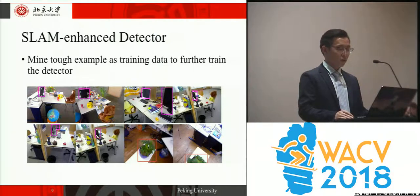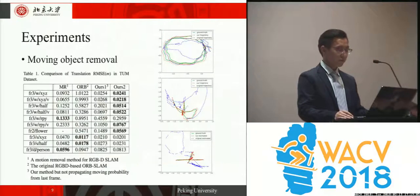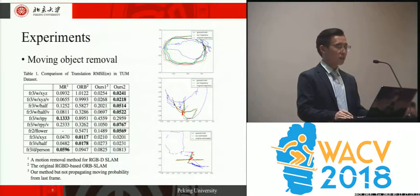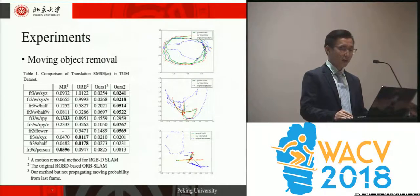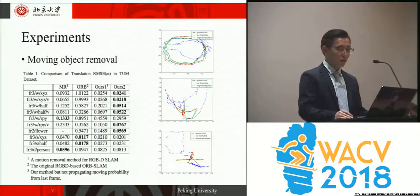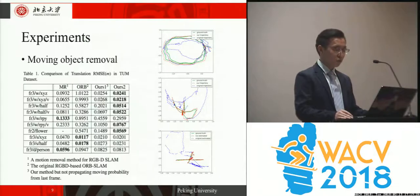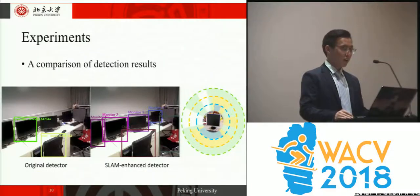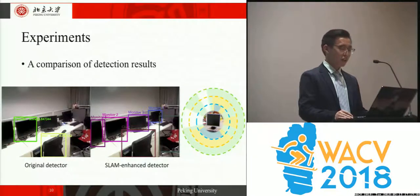Here are some tough examples about monitors and plants we mined. We have respectively evaluated the two main functions of our system: moving object removal and SLAM enhanced detector. Here are examples of computed trajectories using the TUM dataset compared to the ground truth and original ORB-SLAM. Our estimated trajectories are much closer to the ground truth in these dynamic environments. In the comparison of detection results from original SSD and our SLAM enhanced detector, the scenario includes four monitors and two chairs. The SLAM enhanced detector detects all objects successfully, while the original detector only detects one monitor and one chair.